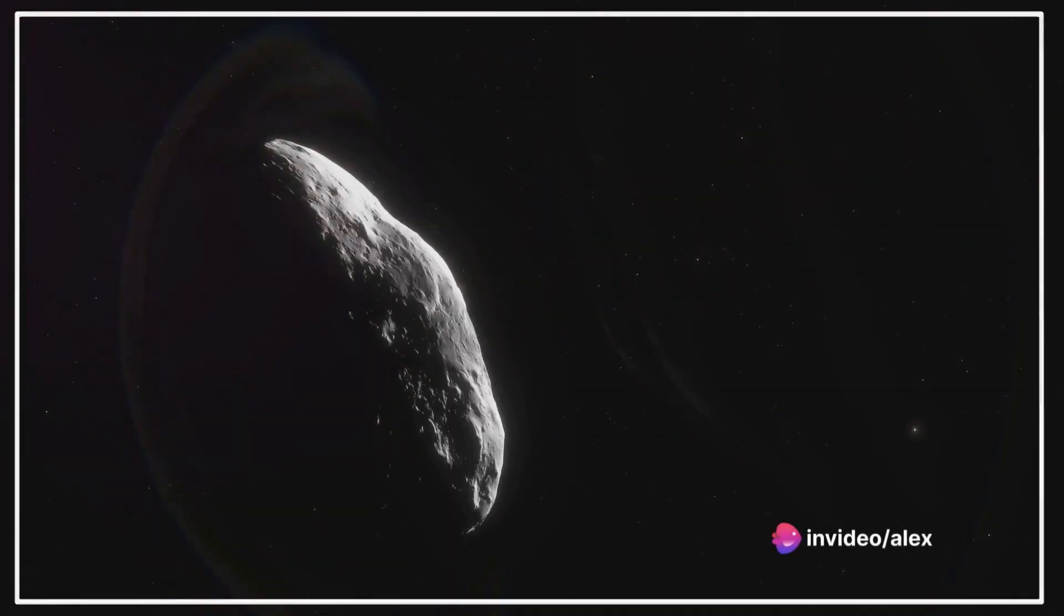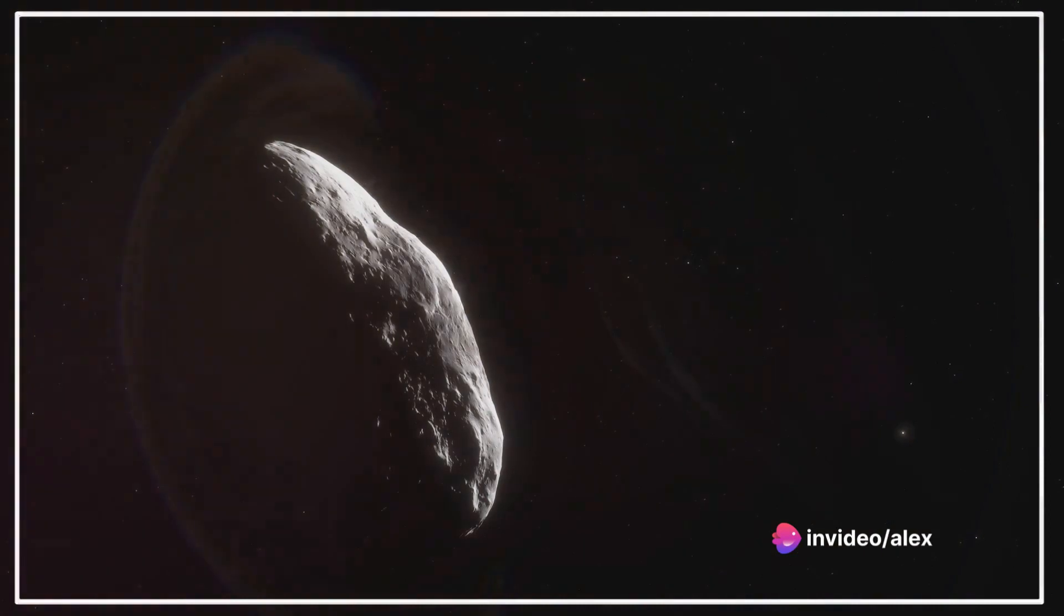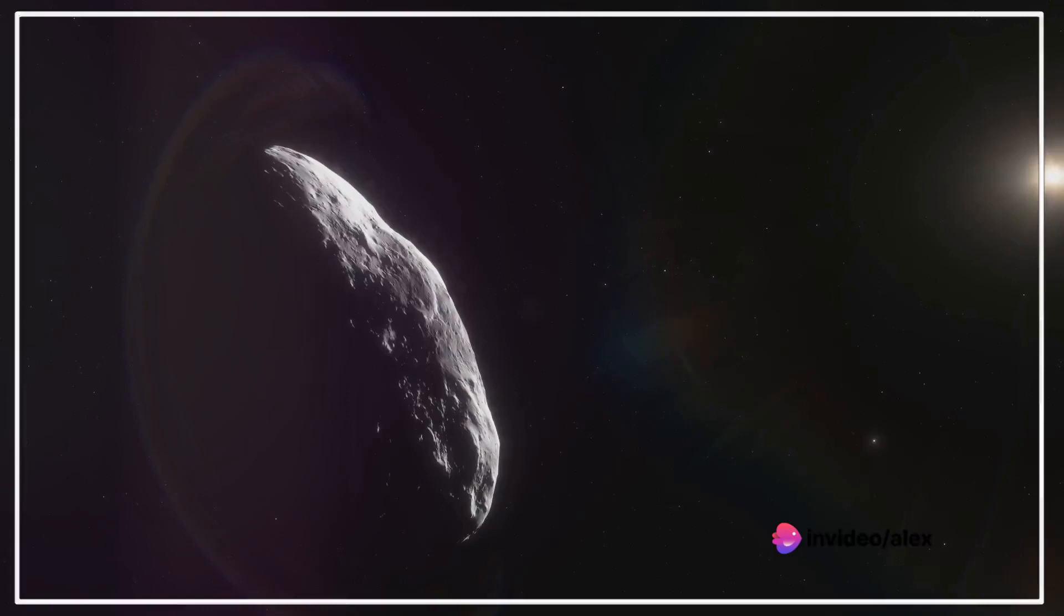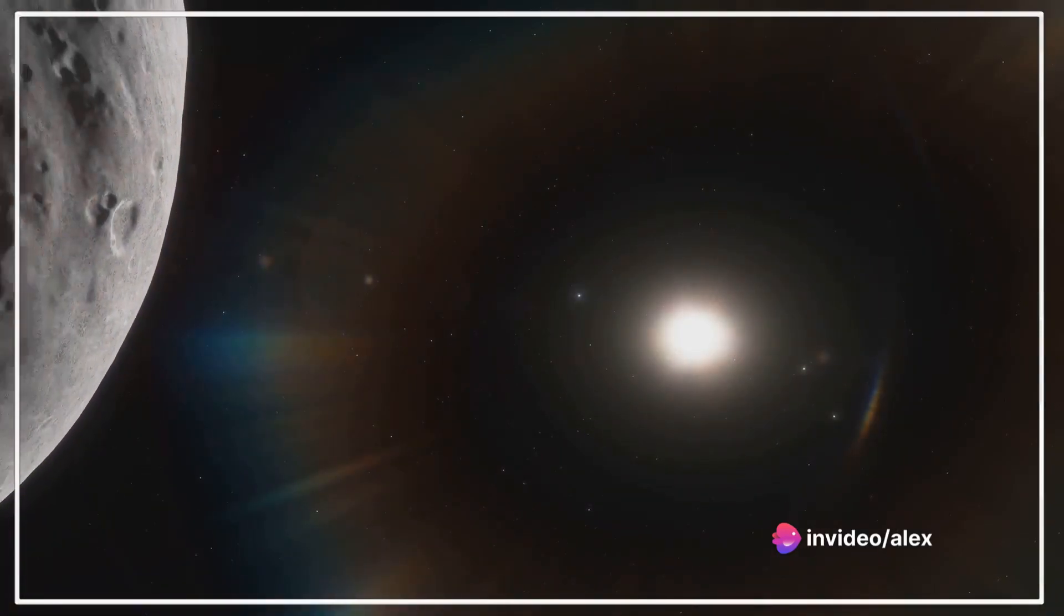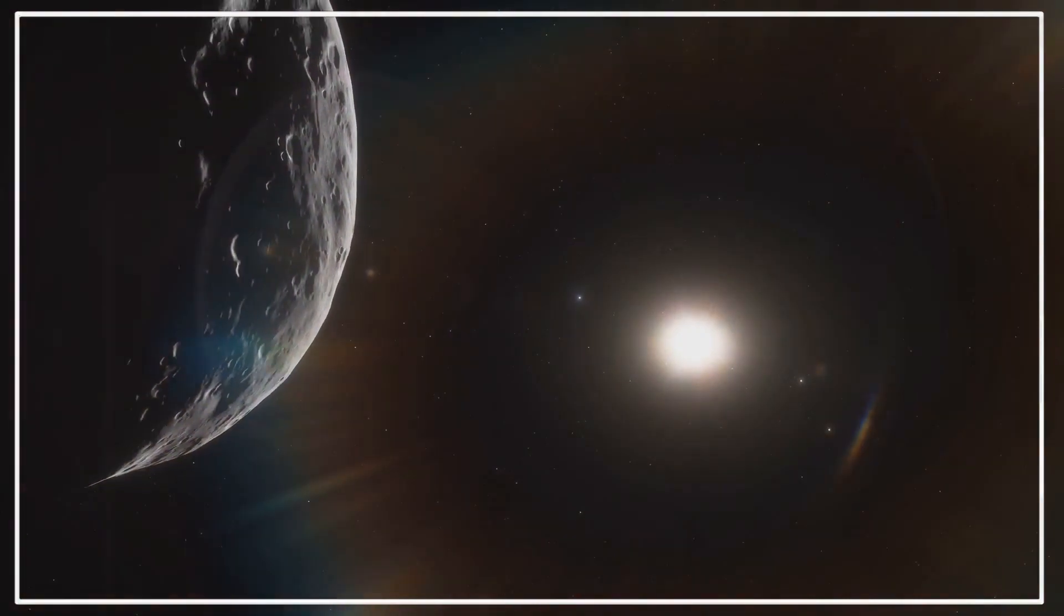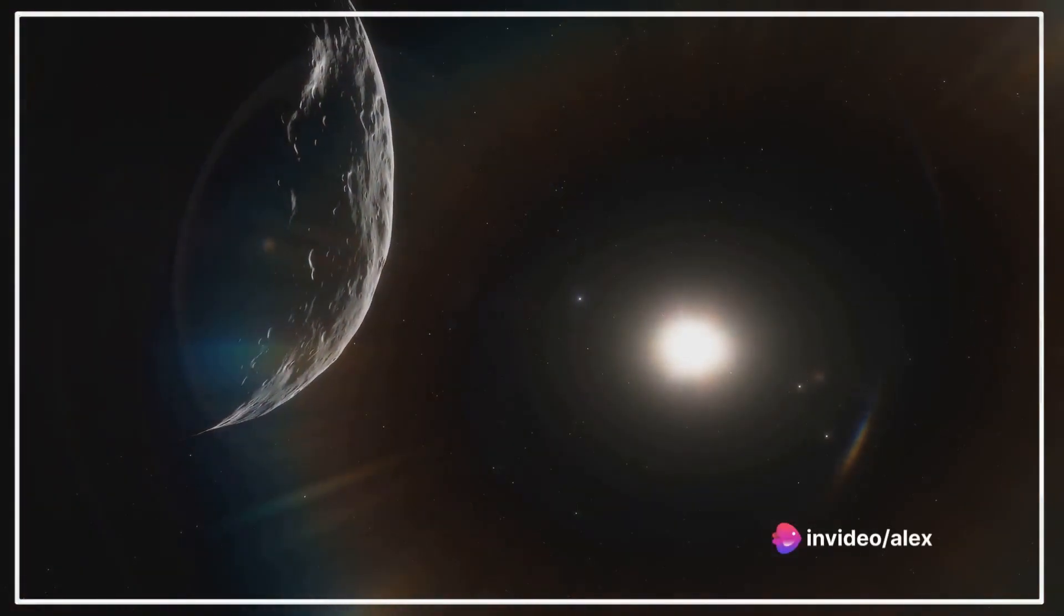Secondly, asteroids in our solar system have a well-documented average speed. They zip around at about 56,000 miles per hour. That's incredibly fast. But it's a snail's pace compared to the speed of light, which is a staggering 670 million miles per hour.